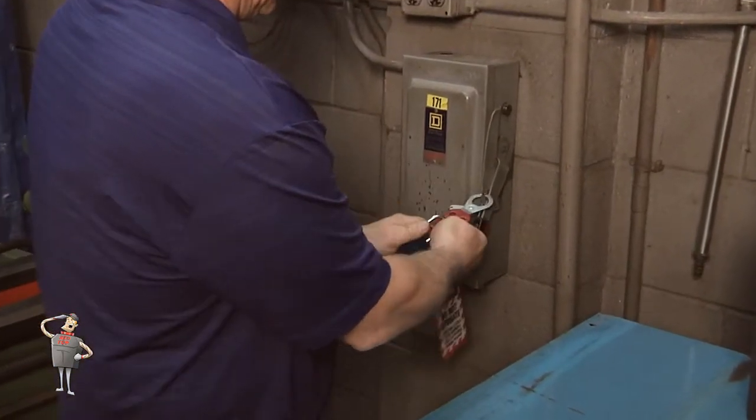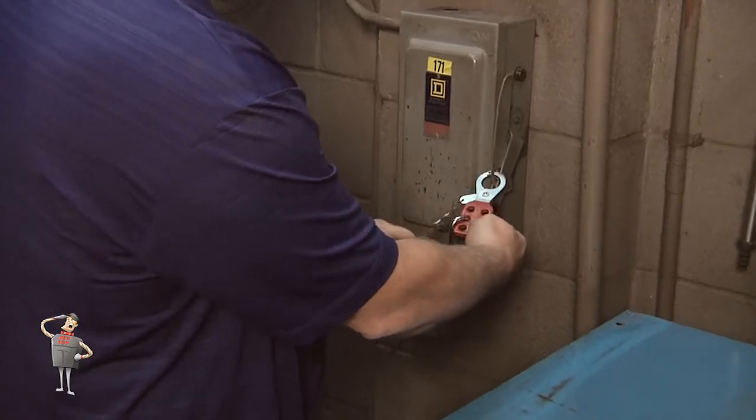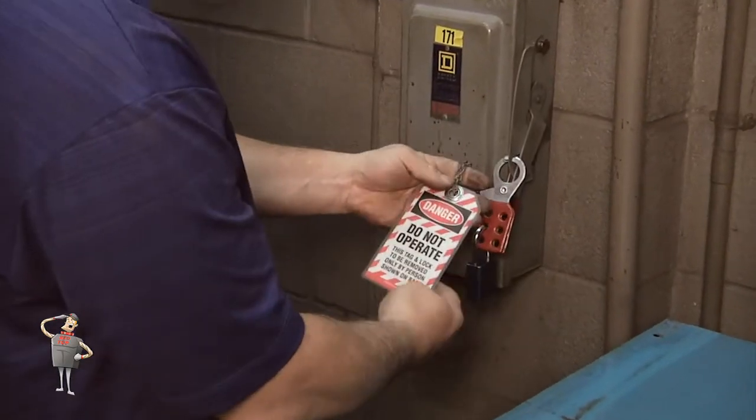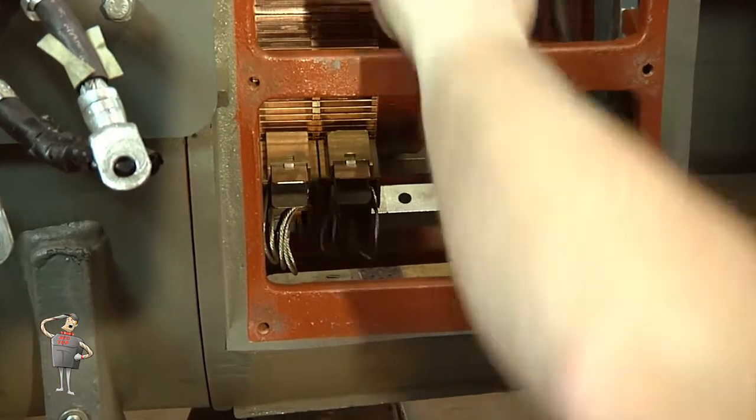Begin the installation process by disconnecting the power to the machine using the approved lockout procedures. Then remove the old brushes.